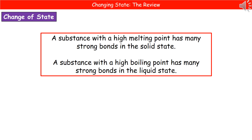If we consider a substance that's got a high melting point, then that tells us it's got many strong bonds in the solid state. If we have a substance with a high boiling point, then that relates to it having many strong bonds in the liquid state.